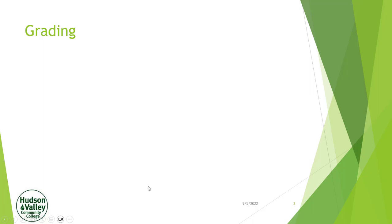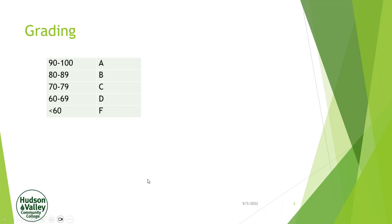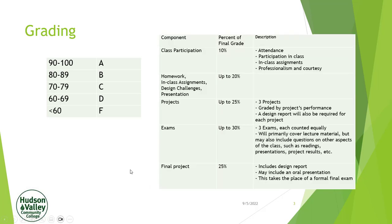Grading. There isn't a student alive that doesn't want to know how their grades work. We're going to use a straight 90-80-70 scale — that's HVCC and SUNY policy. The breakdown works roughly like this: the exam is probably going to be worth 25%, and the final project worth 20%, which gets us to 100%. Class participation is 10% — you cannot get an A in this class unless you participate.